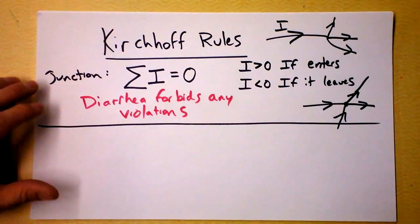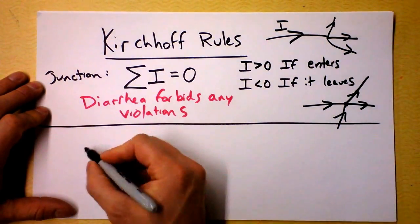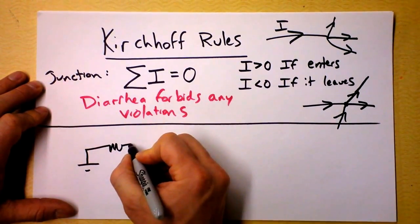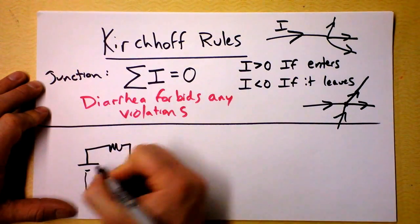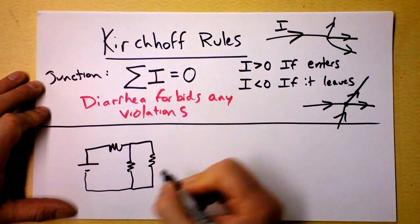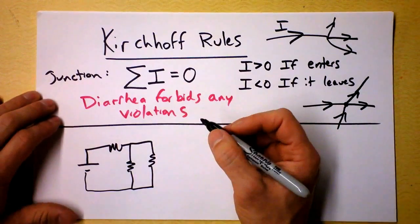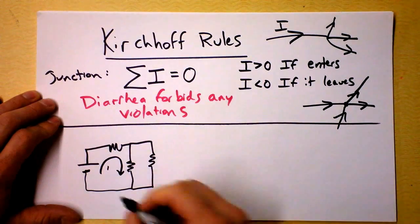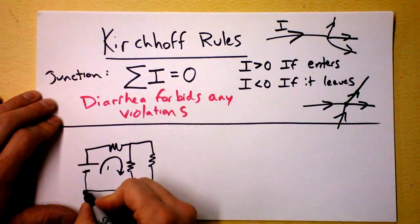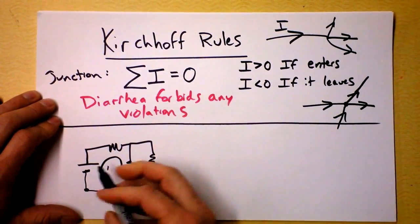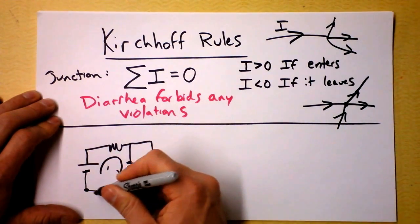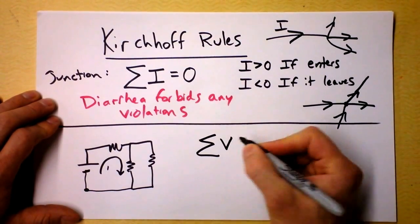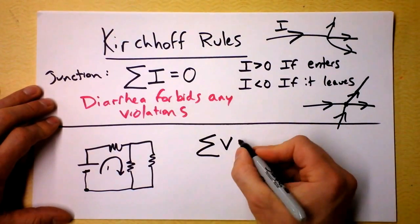And then there's also Kirchhoff's loop rule. Kirchhoff's loop rule says that as you go around a circuit, if you go around this simple circuit, you could call that loop one. If you go around that circuit in loop one, then you will find that the potential here is the same the first time you go around as it is the second time you go around.